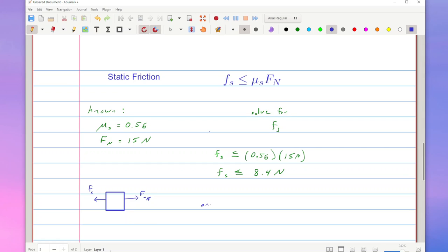For any applied force less than 8.4 newtons, it's going to stay still. If I happen to apply an applied force of five newtons, then friction says, yep, I can handle that. My static friction is going to be equal to five newtons, which is less than the maximum, no problem.